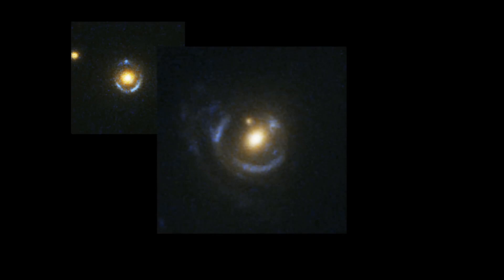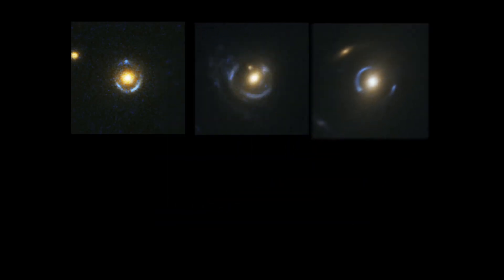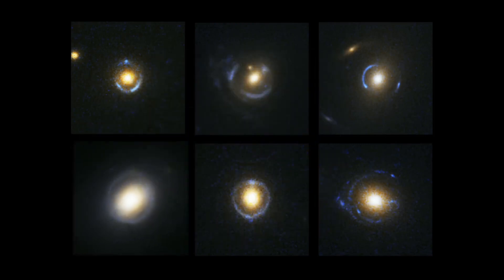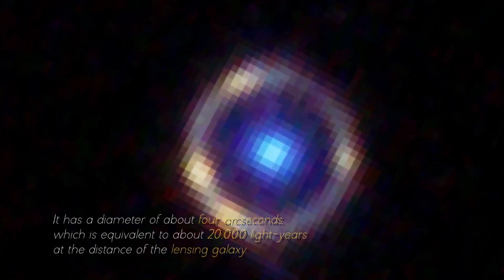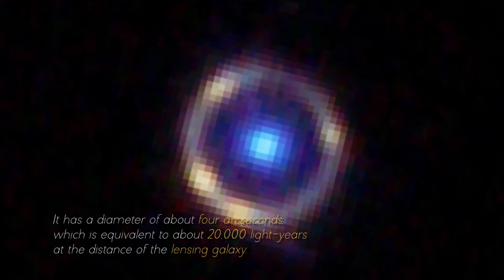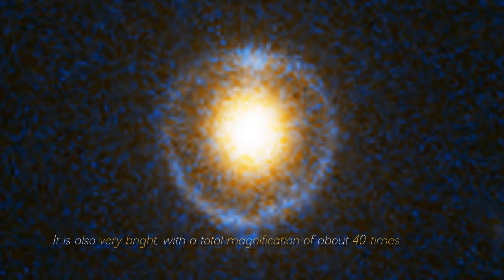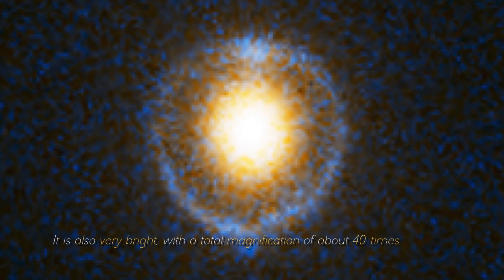In the case we are exploring, the Einstein Ring surrounding this galaxy is one of the most complete and symmetric ever observed. It has a diameter of about 4 arc seconds, which is equivalent to about 20,000 light years at the distance of the lensing galaxy. It is also very bright, with a total magnification of about 40 times.